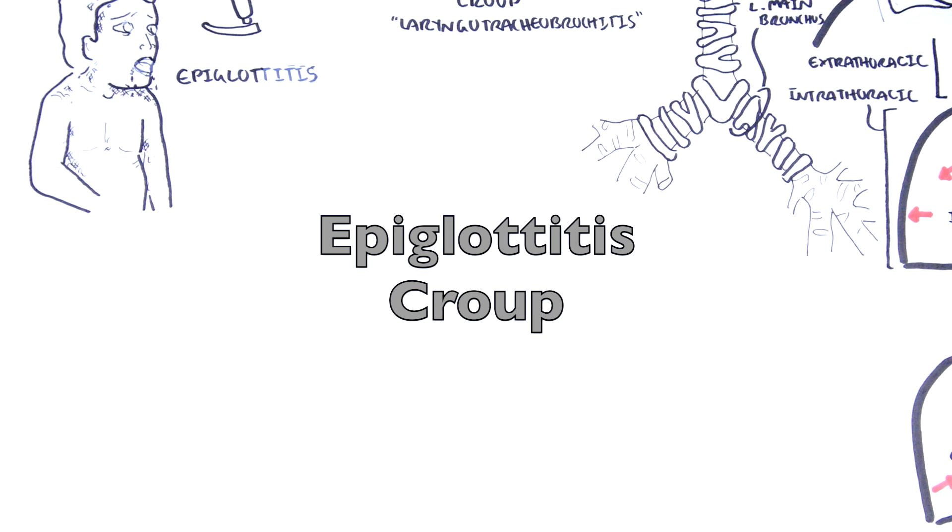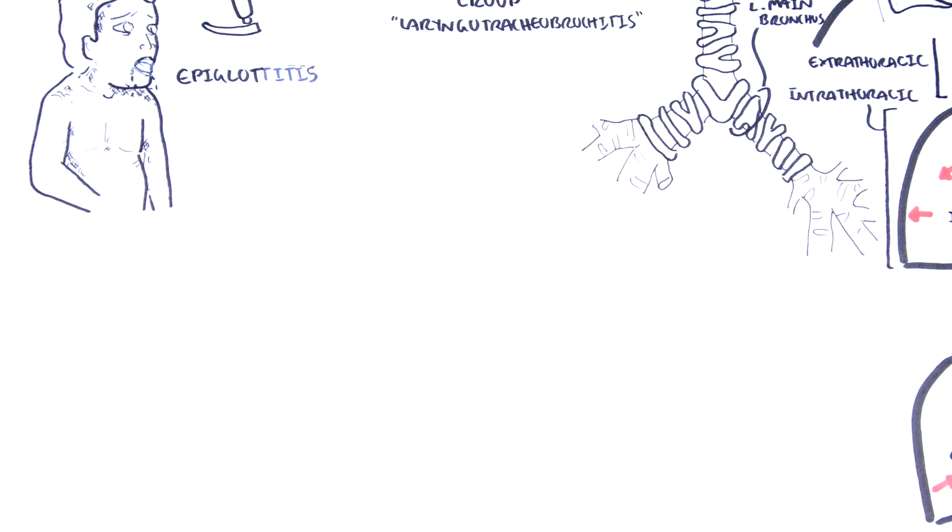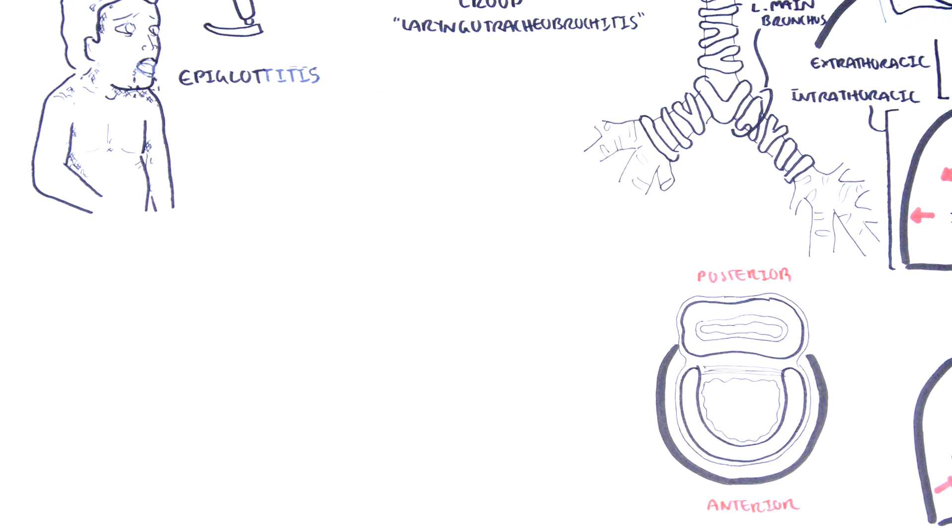The infectious causes of stridor we have discussed is epiglottitis and croup. Another infection along the same area is bacterial tracheitis. Here is a cross-section of the trachea. You can see that the esophagus runs posteriorly to the trachea.